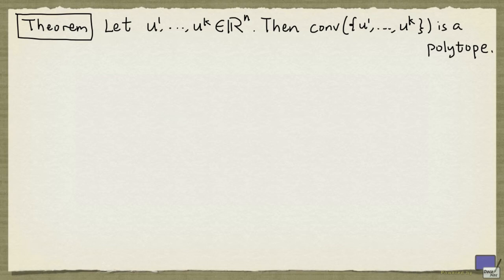So if we are given a polytope, there are two ways to describe it. One is to list its extreme points. This representation is usually known as the V representation, V standing for the word vertex.